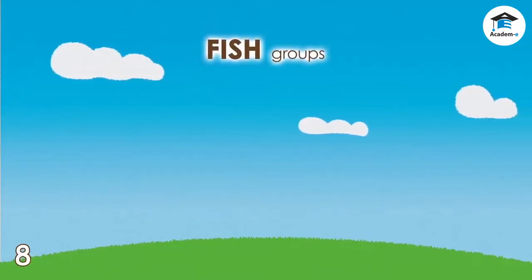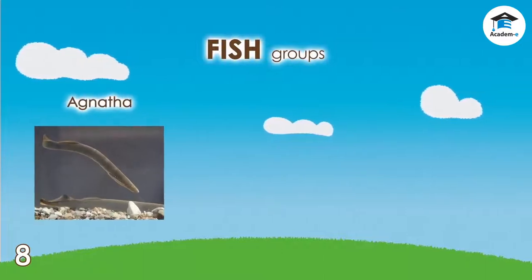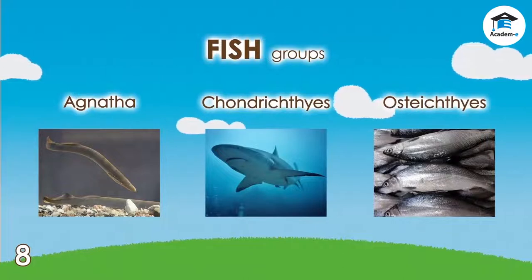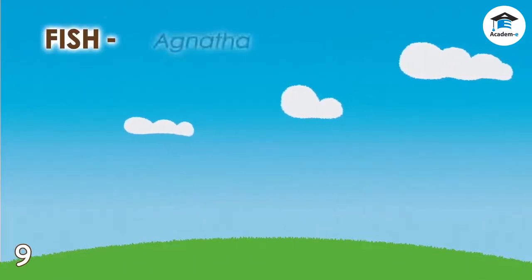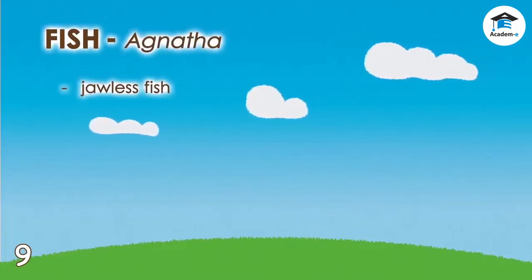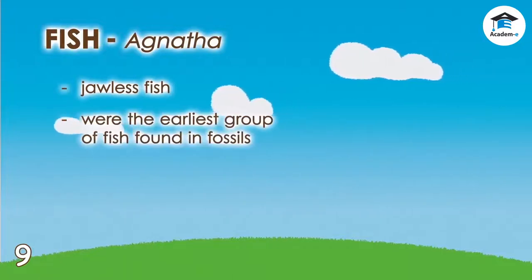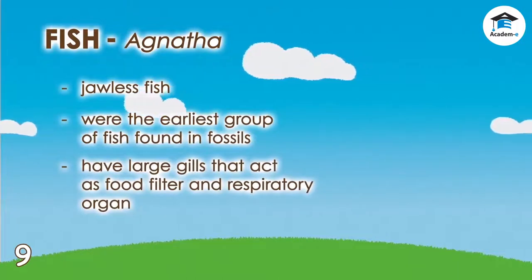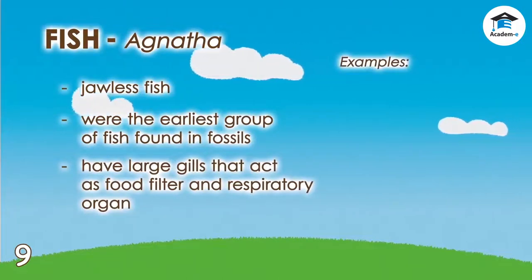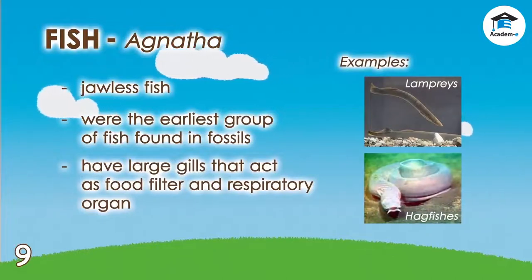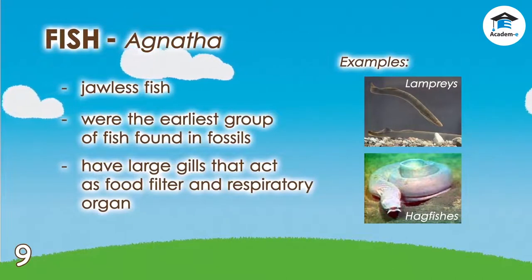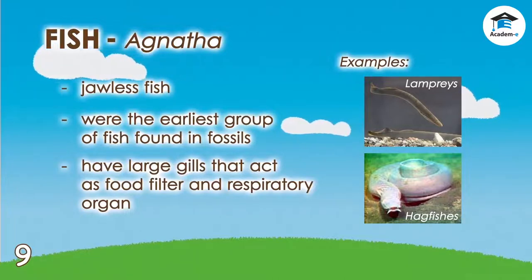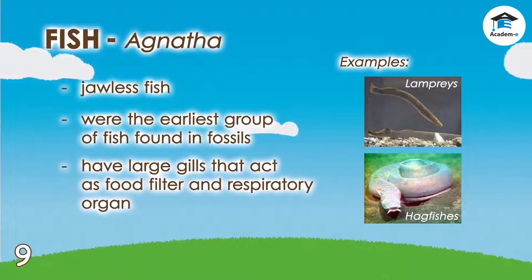Fishes can be divided into three groups: Agnatha, Chondrichthyes, and Osteichthyes. Agnatha, or jawless fish, were the earliest group of fish found in fossils. Their large gills act as food filter and respiratory organ. This group includes lampreys and hagfishes. The only known living agnatha today live as parasites — lampreys — and scavengers — hagfishes — on other fish. These long, slimy fishes lack scales and look like eels.